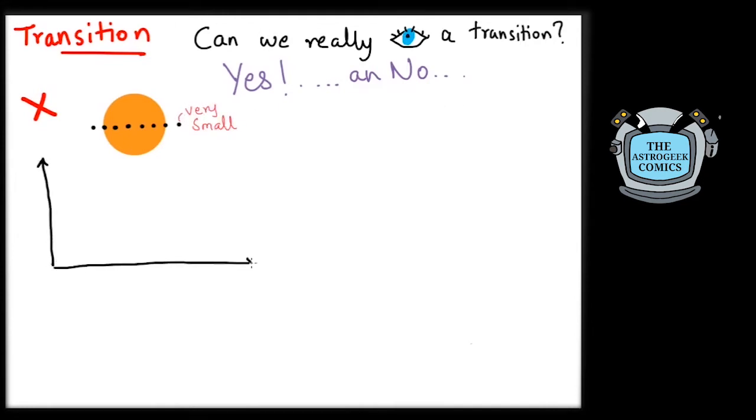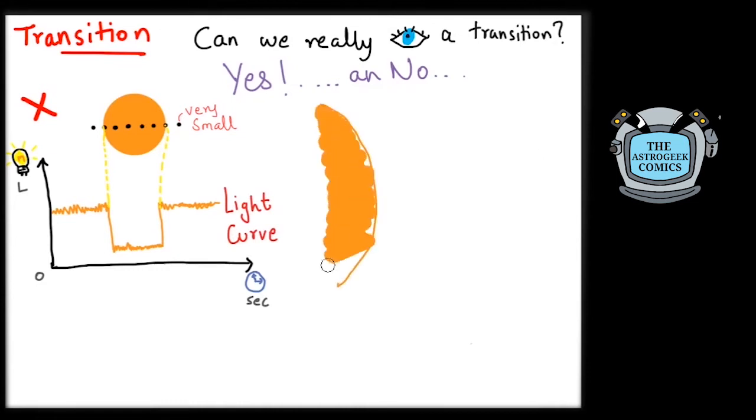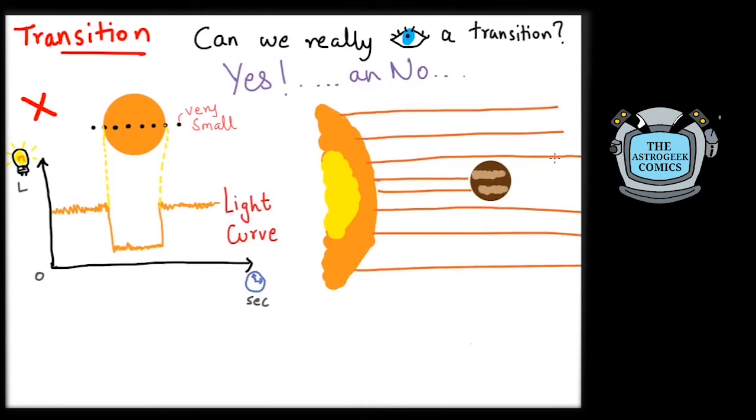But using sensitive instruments that measure the brightness of the star, we will notice dips in the brightness of the star as the planet passes in front of it. The curve of the brightness of the star against time is called its light curve. This is because the planet being non-luminous and opaque will block some of the visible surfaces and hence the brightness of the star.